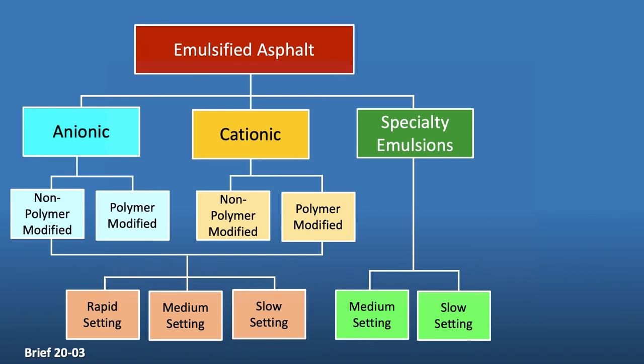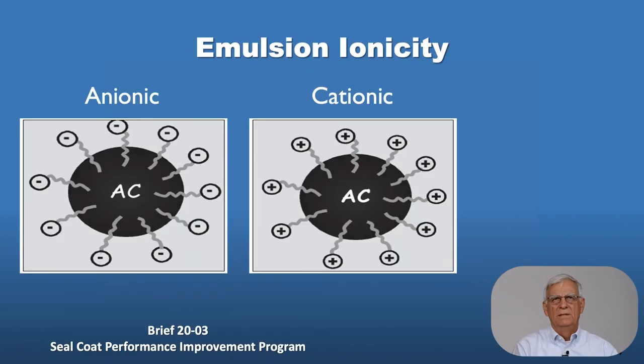For emulsified asphalts, we have anionic and cationic, and specialty-use emulsions as well. We have non-polymer and polymer-modified anionic and cationic emulsions. And then we have rapid setting, medium setting, and slow setting — we use the word 'setting' for emulsions, whereas we use the word 'curing' for cutback asphalts. This gives you a broad look at the types of materials available that we'll go into a little more detail on.